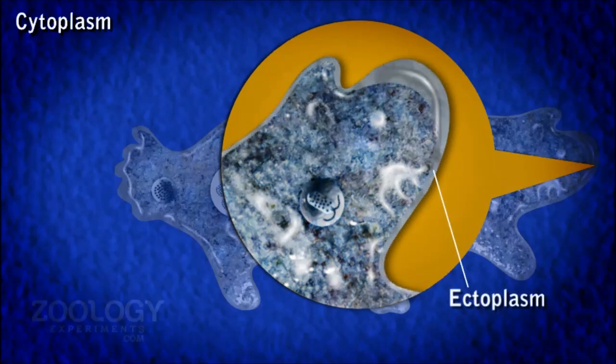Ectoplasm. Lying immediately beneath the plasma lemma, ectoplasm is thin, clear and transparent. It is rather rigid, contractile and under tension. It is most clearly visible at the tip of a pseudopodium called a hyaline cap.